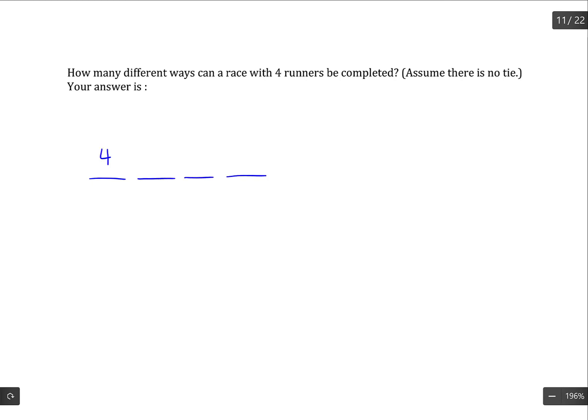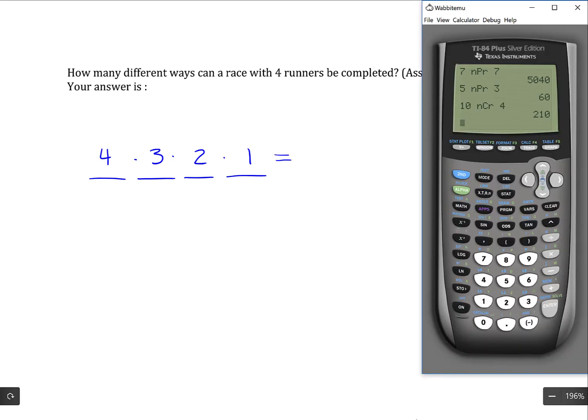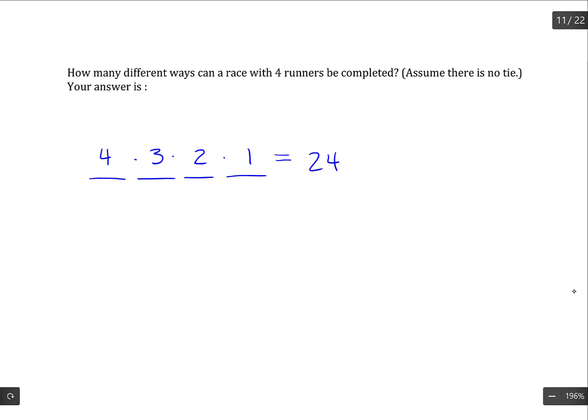And one of those runners is going to finish first, another is going to finish next, and then the third runner, and then the fourth. If we multiply all these together, then 4 times 3 times 2 times 1, that gives me 24 ways this can happen.